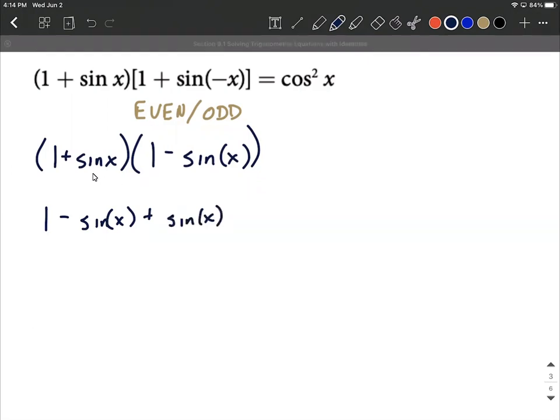Then the last, we have sine of x multiplied by negative sine of x. That's positive times a negative makes negative. Sine times sine makes sine squared.